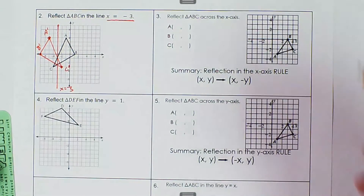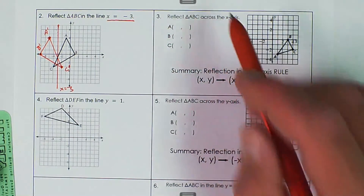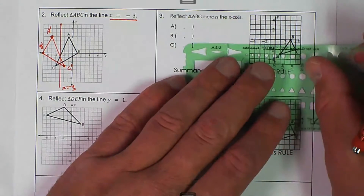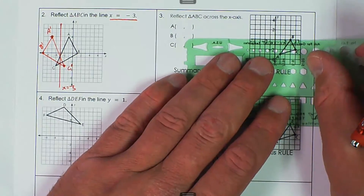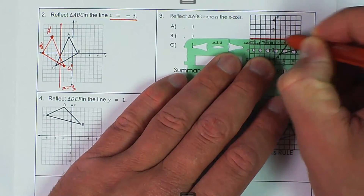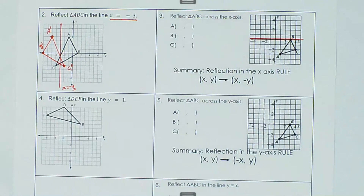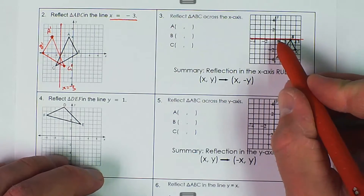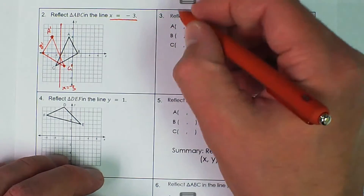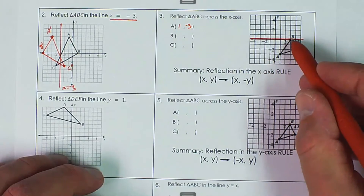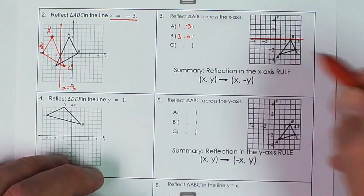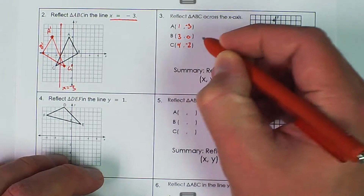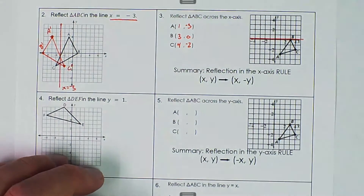The next one is a reflection of ABC across the x-axis. Here is the x-axis, right here — I'm going to highlight that. To check the coordinates: point A is at (1, negative 3), point B is at (3, 0), and point C is at (4, negative 2). We want to see where each point goes.